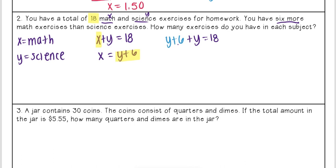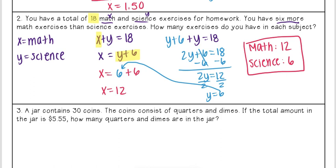Go ahead and pause the video. I want you to finish solving this, and then when you think you got it, you can go ahead and press play. Okay, so the answer you should have gotten was that there were 12 math exercises and 6 science exercises. So when I solved for y here, I ended up getting 6. To get my value for x, I just plugged in 6 for y and I got 12. x stood for my math exercises, so math was 12 and then science 6.